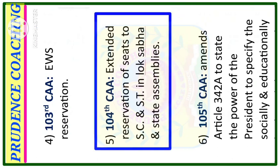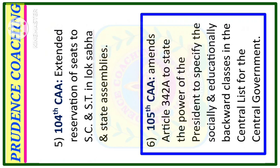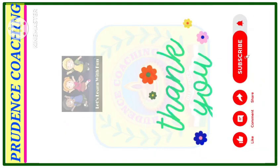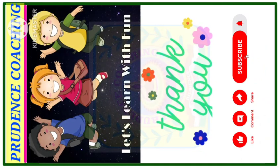The 104th CAA extended reservation for Scheduled Castes and Scheduled Tribes in Lok Sabha and State Assemblies. The 105th CAA amends Article 342A to state the power of the President to specify the socially and educationally backward classes in the central list for the central government. So with this we come to the end of this particular video.